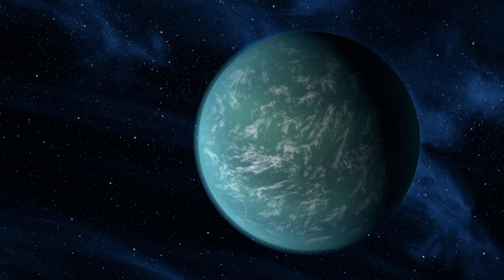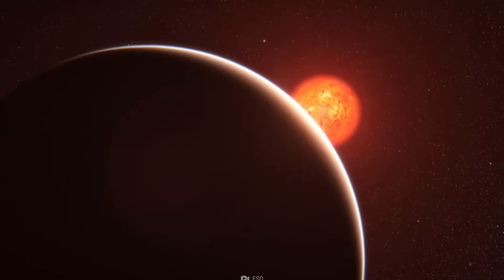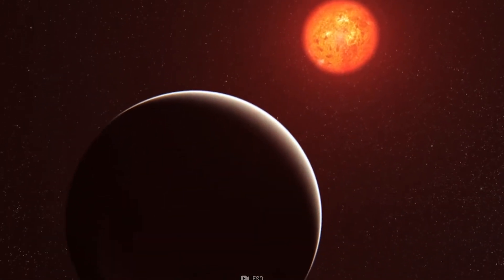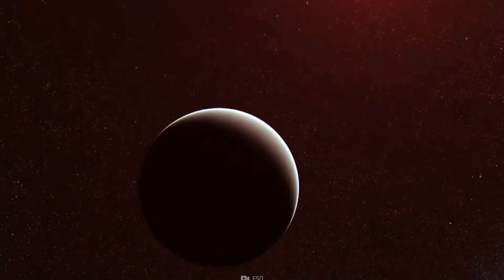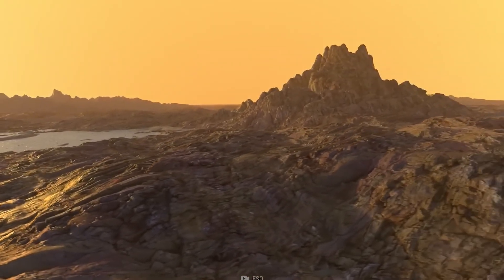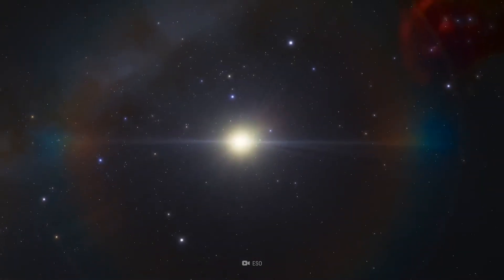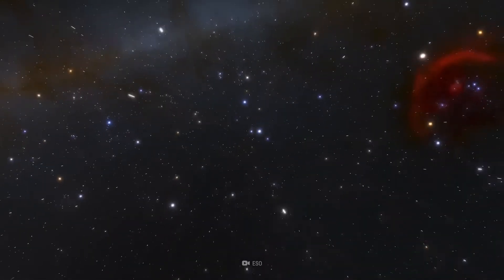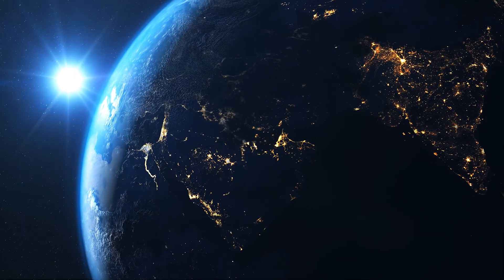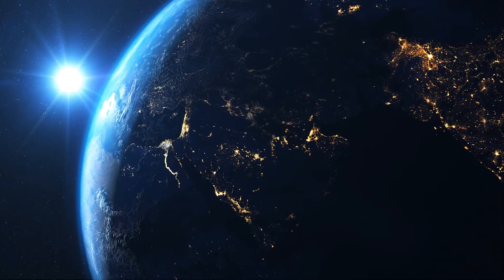Number three, Kepler-69c. The planet orbits its Sun once every 242 days, placing it in a position similar to Venus in our solar system. The host star of Kepler-69c is around 80% as bright as the Sun, hence the planet seems to be in the habitable zone. Kepler-69c is about 2,700 light-years away and is over 70% bigger than Earth. As a result, scientists are once again uncertain about its composition.